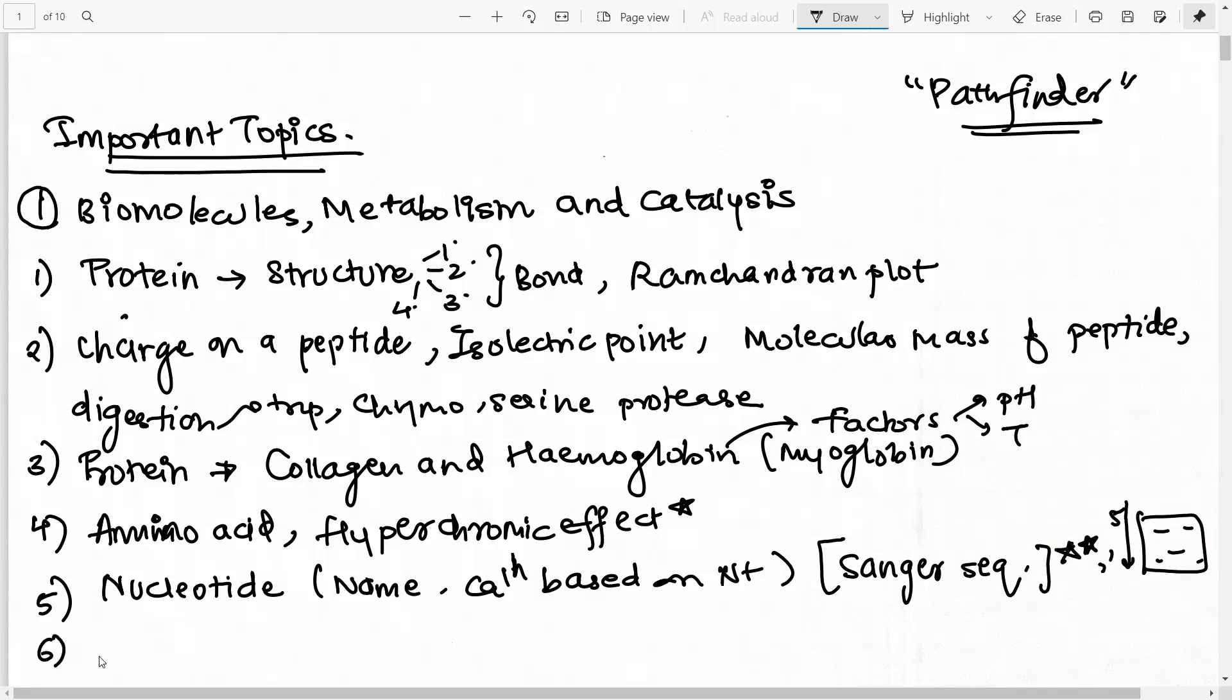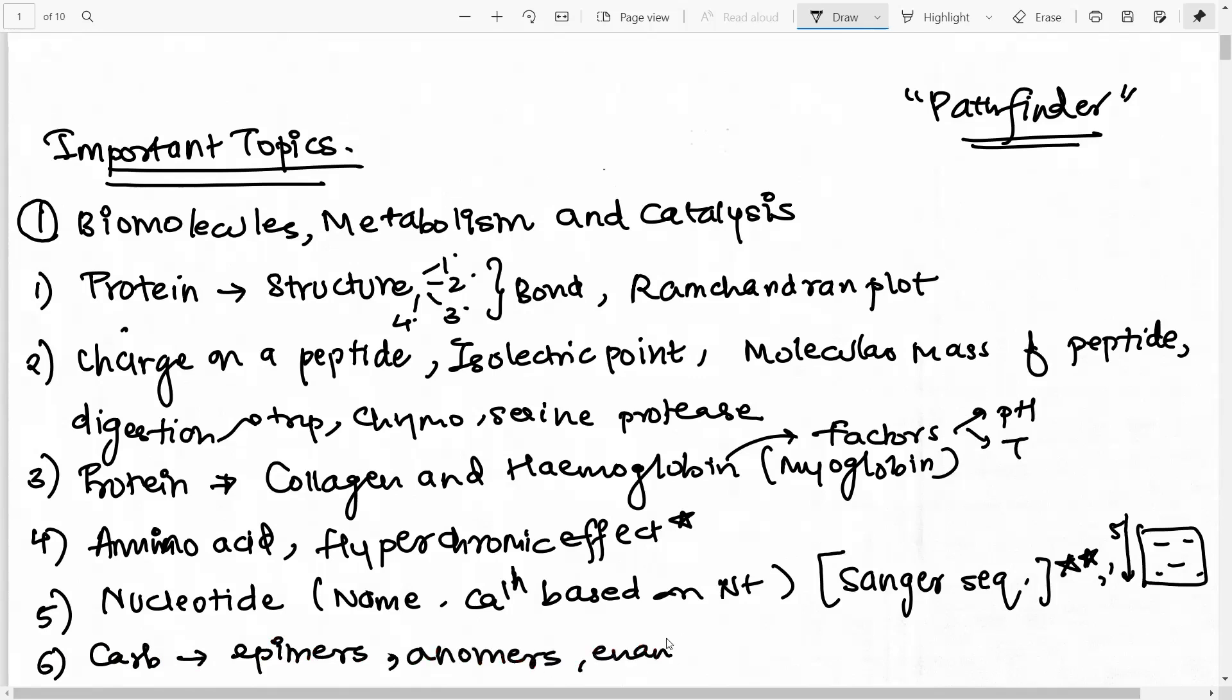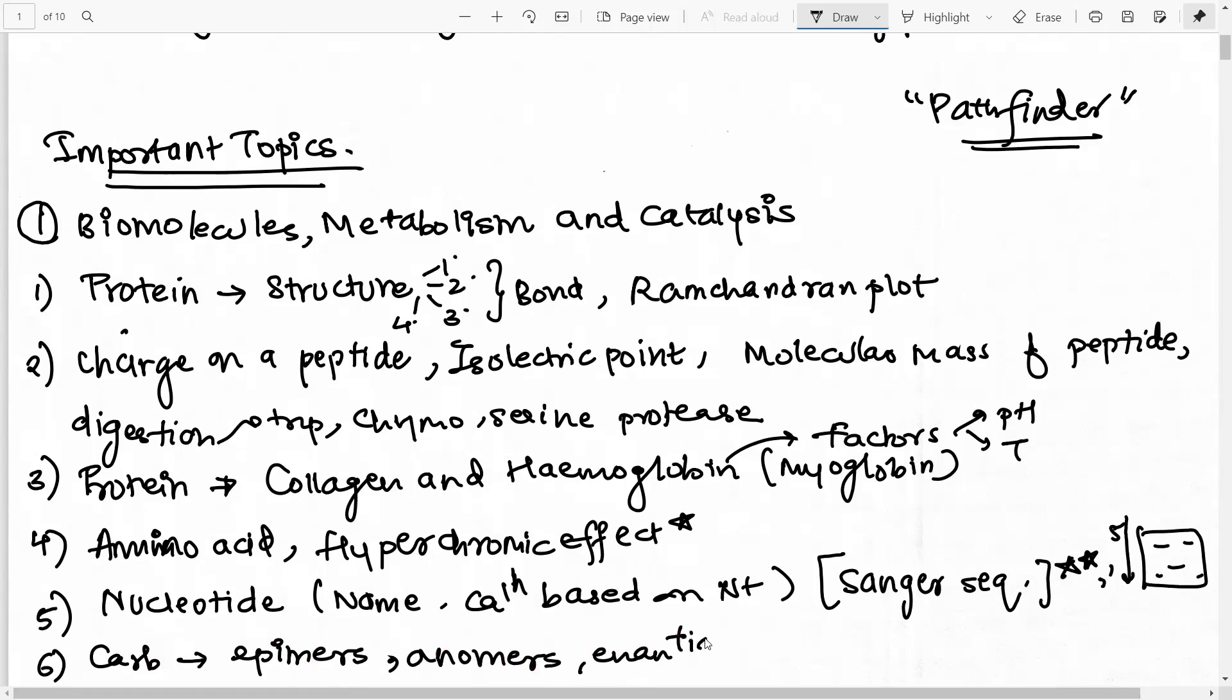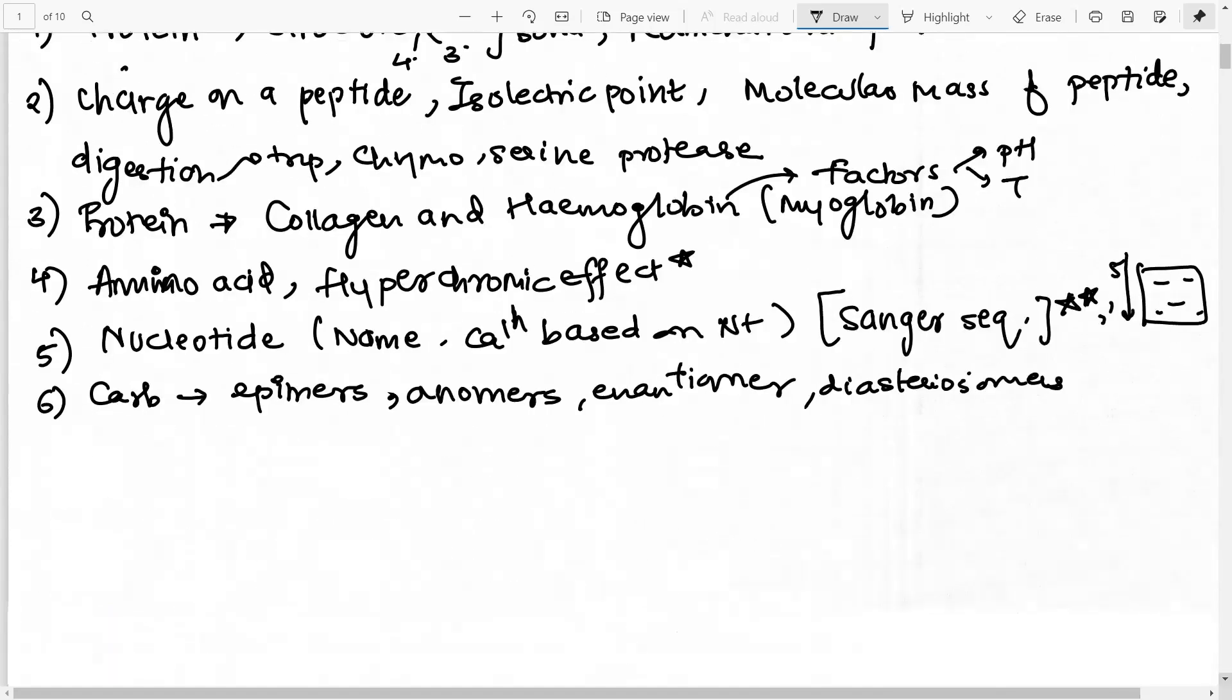Then moving on to the biomolecules. So in carbohydrates, there are many questions asked on definitions - like what are epimers, what are anomers, what is an enantiomer, all these kind of definitions, what is diastereoisomers. These you can expect, you should know these simple definitions and half the job gets done over there. So that is about this section.